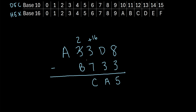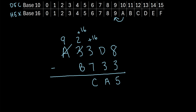In the next column, we have 2 minus B. B is the same thing as 11, so we can't do 2 minus 11. We borrow from the next column — one less than A in the hexadecimal system is 9, so this A becomes a 9. We add 16 to this 2: so 2 plus 16 is 18. Then 18 minus B — B is 11 — so 18 minus 11 is 7. And then lastly, we have 9 minus nothing, which is just 9. So our final answer is 97CA5.